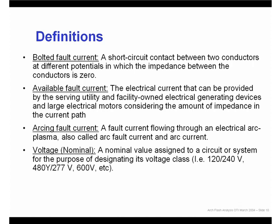The next term is the available fault current, which is defined as the electrical current that can be provided by the serving utility and facility-owned electrical generating devices and large electrical motors, considering the amount of impedance in the current path. It is very important for an engineer to determine the available amount of fault current at the utility service entrance, and also the minimum amount, as a lower minimum could result in a longer fault clearing time and therefore a much higher release of incident energy in the event of an arc fault.